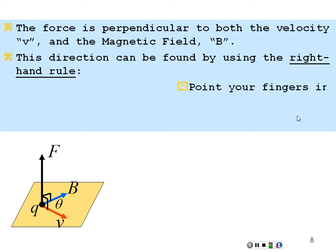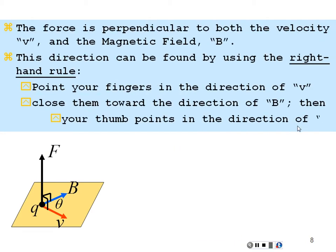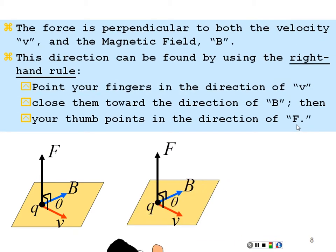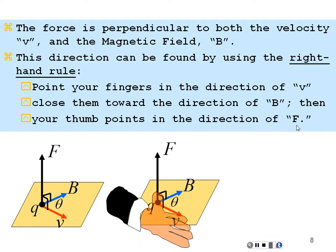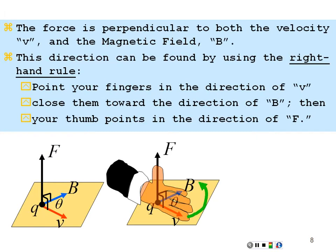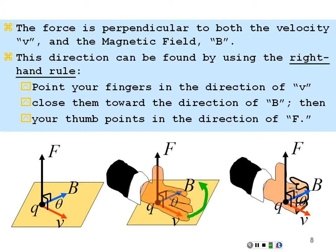To visualize the right-hand rule: point your fingers in the direction of the first vector — the velocity — close your hand toward the magnetic field, and your thumb points in the direction of the force for a positive charge.